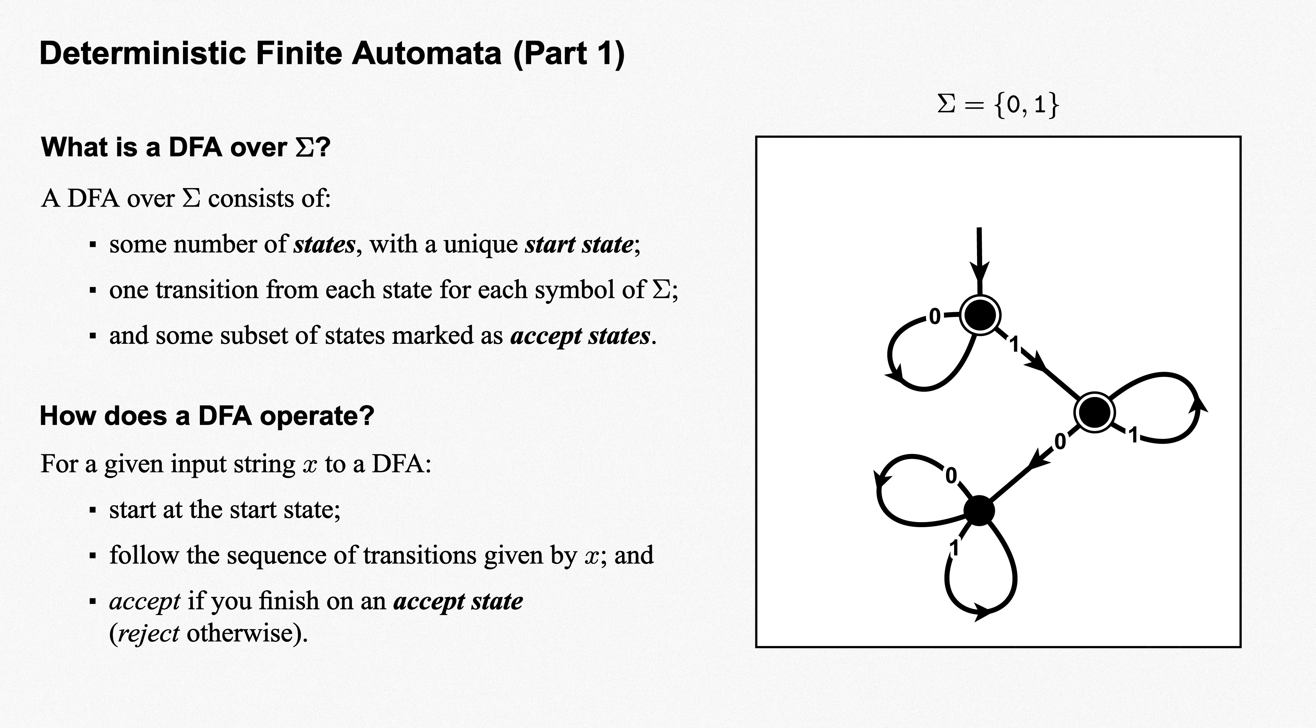Our DFA can be run similarly on any string over sigma. Each one will be either accepted or rejected. As one last example, the empty string epsilon is a string over sigma. We can run the DFA on it as well. We start at the start state, and we've already run out of symbols in our input string, so that's where we finish. The start state in this DFA is an accept state, so this DFA accepts the empty string.